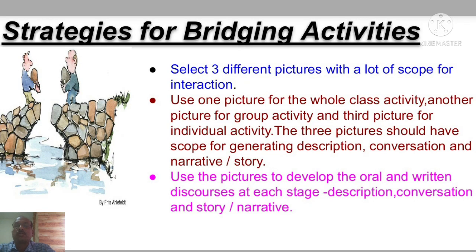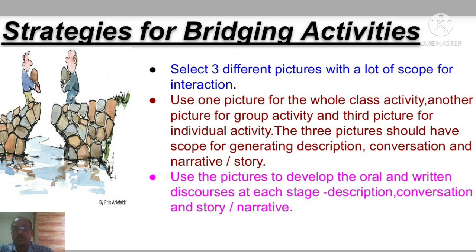Now let us come to strategies for bridging activities. The first strategy: select three different pictures with a lot of scope for interaction. Use one picture for the whole class activity, another picture for group activity, and a third picture for individual activity. The three pictures should have scope for generating description, conversation, and narrative or story. The third strategy: use the pictures to develop oral and written discourses at each stage — description, conversation, and story or narrative.